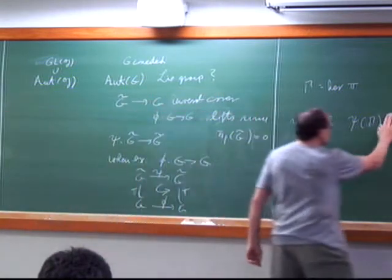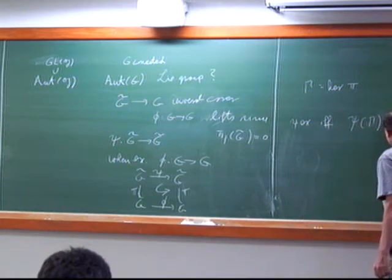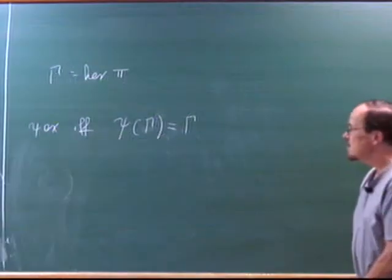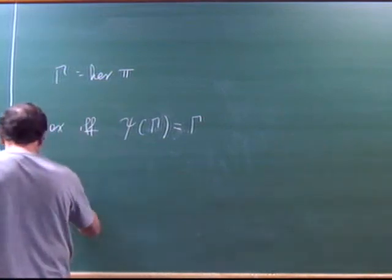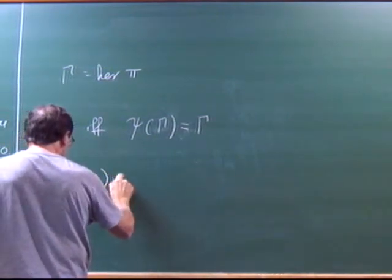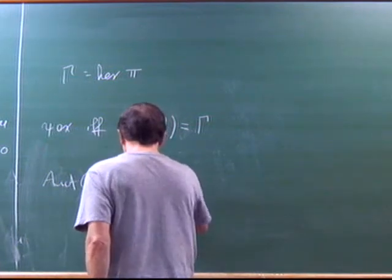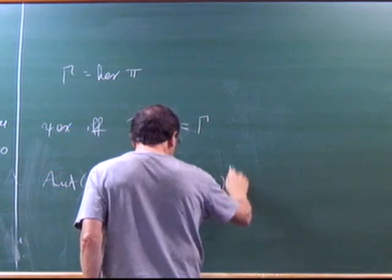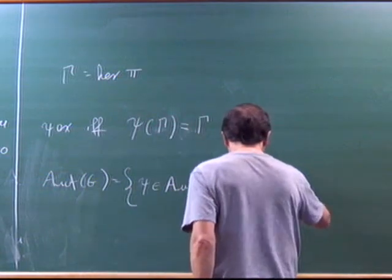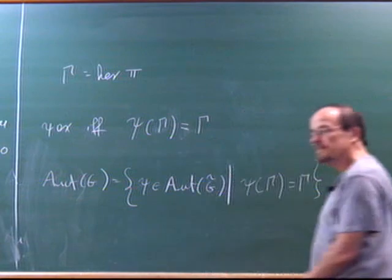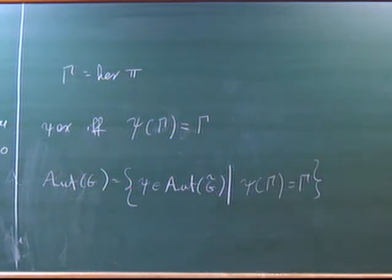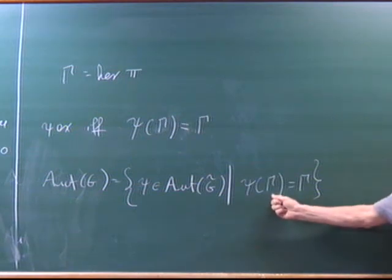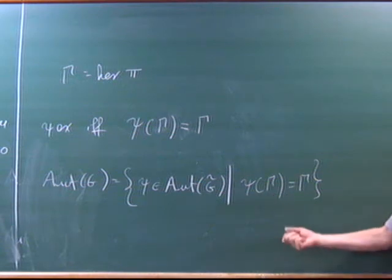Since C is an isomorphism, I want C of gamma equal to gamma. So what is Aut(G)? It's the set of elements C in Aut(G-tilde) such that C of gamma equals gamma. That's what Aut(G) is downstairs — only certain automorphisms upstairs, which descend, defined by this equation. Now it's closed, so it's a Lie subgroup, therefore it's a Lie group. You can't show it directly; you have to go over the universal cover like this.